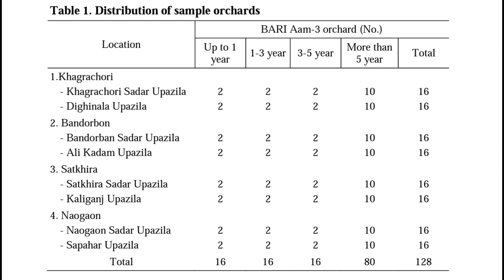This table represents the age of farms and their geographical location. Farms up to one year old numbered 16, farms one to three years old also numbered 16, farms three to five years old also numbered 16, and farms more than five years old numbered 80, giving a total of 128 farms selected for this research.